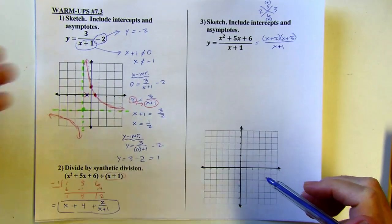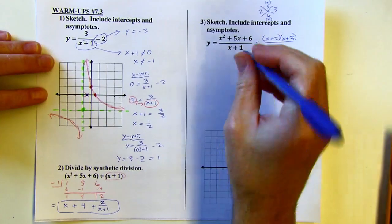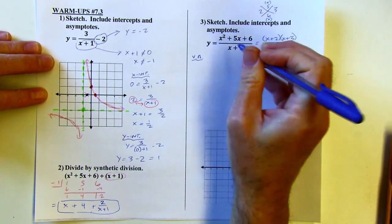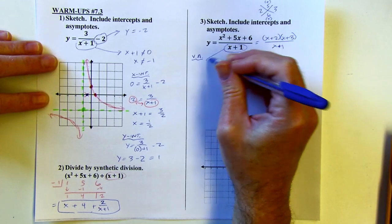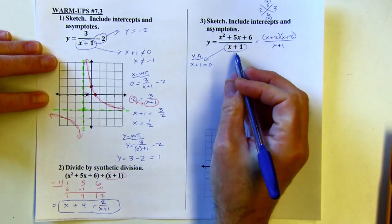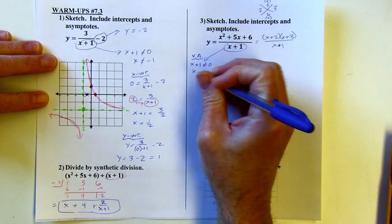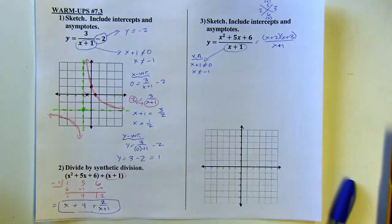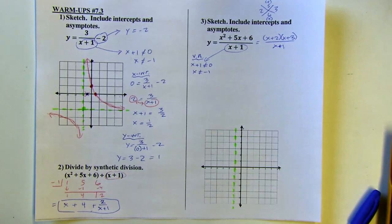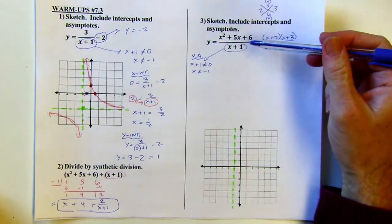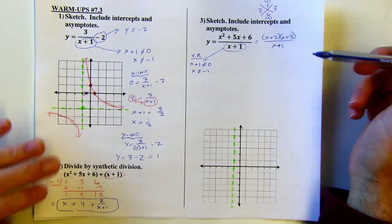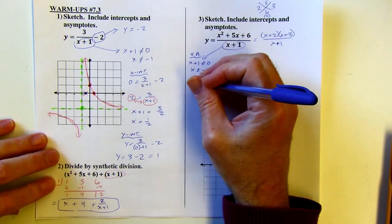Let's look for the intercepts and asymptotes. The vertical asymptote comes from setting the denominator equal to 0 — x can't equal negative 1. So I've got a vertical asymptote at negative 1. With a larger degree polynomial in the numerator than in the denominator, and I can't reduce it, I'm actually not going to have a horizontal asymptote — I'm going to have a slant asymptote.